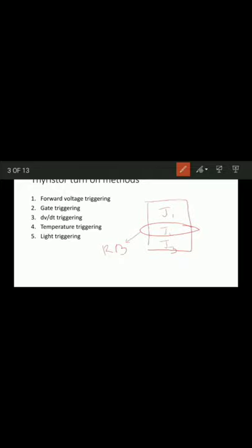At that moment, the reverse-biased junction J2 undergoes avalanche breakdown. The voltage at which this occurs is called the forward breakover voltage, represented by VBO. At this voltage VBO, the characteristics break over and shift to the on-state position with breakover current IBO.